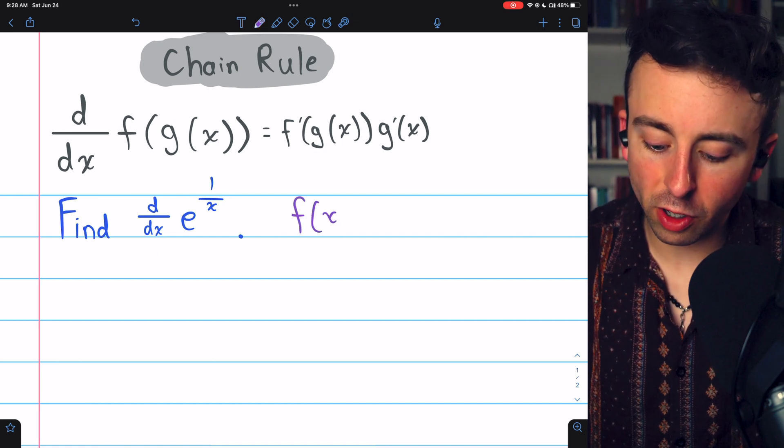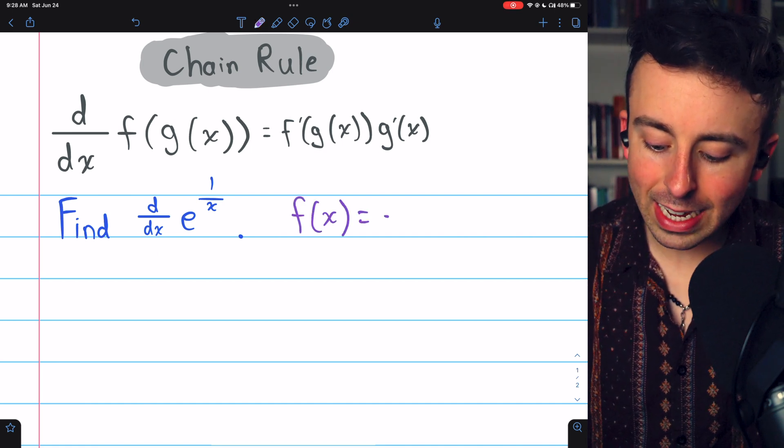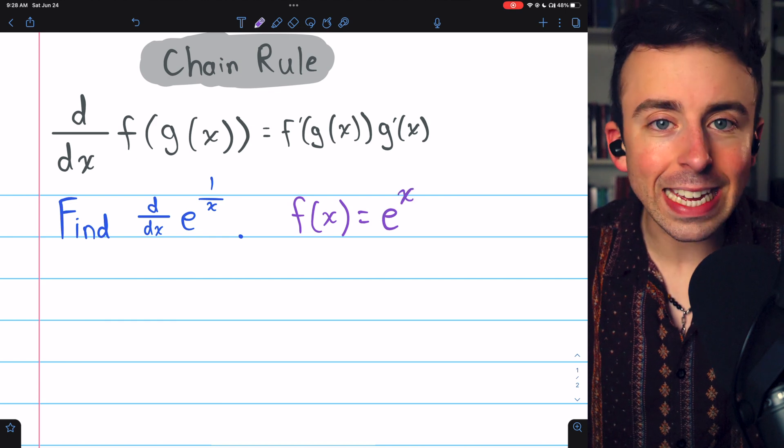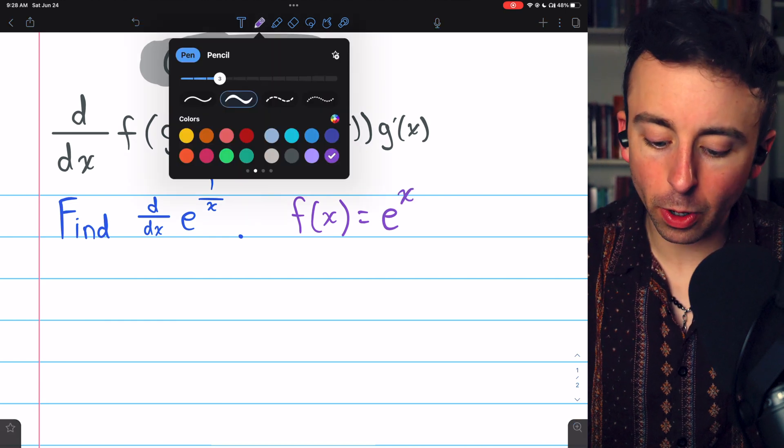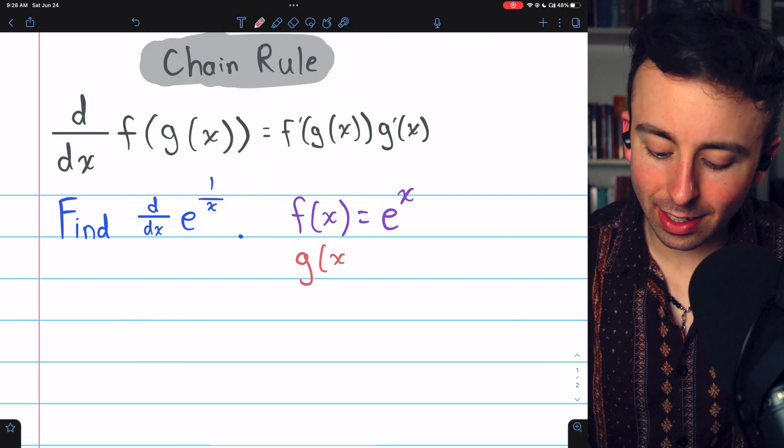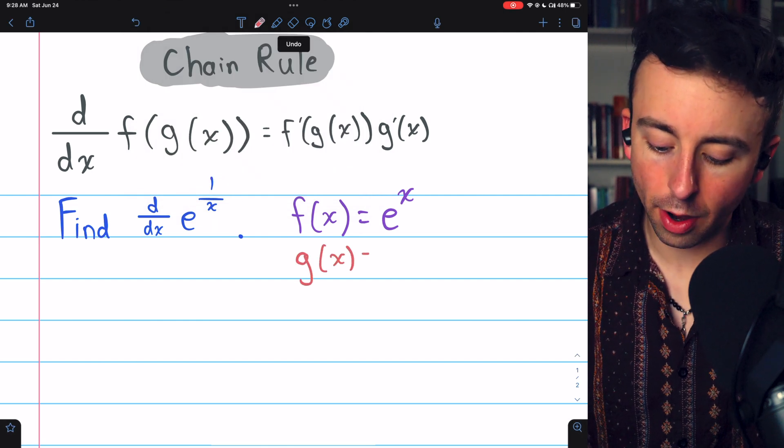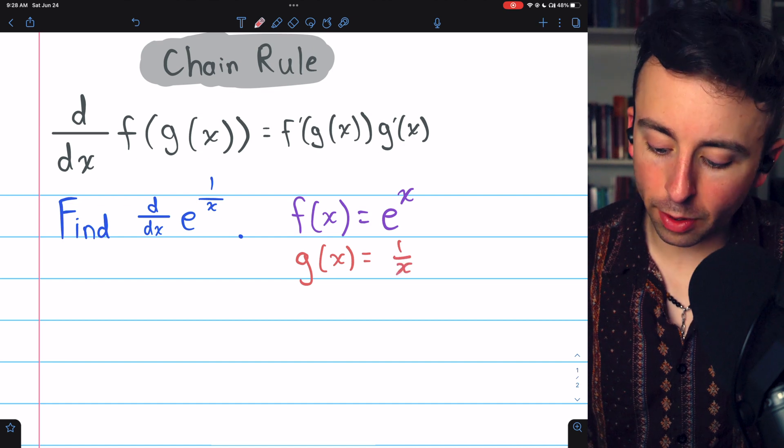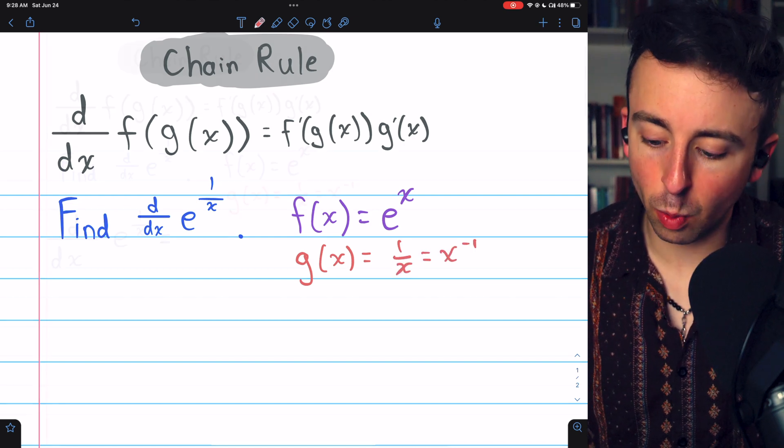In this problem the outside function which we will call f of x is e to a power so e to the x. That power, that inside function, we'll call g of x. In this case of course that is 1 over x which we could also write as x to the negative 1.